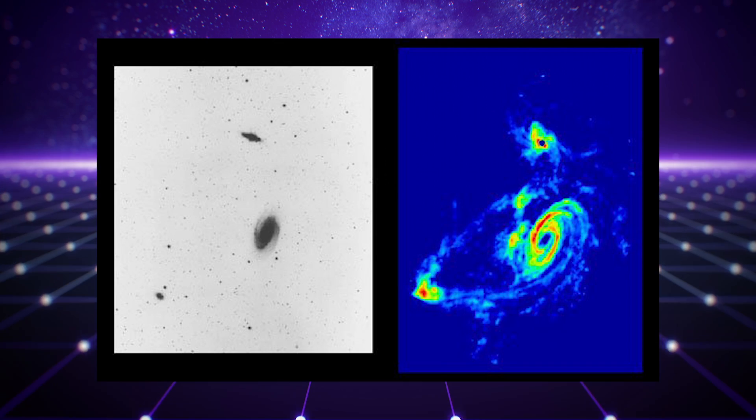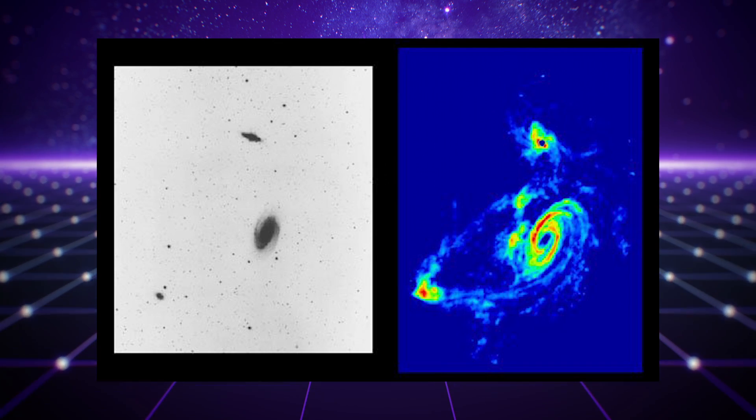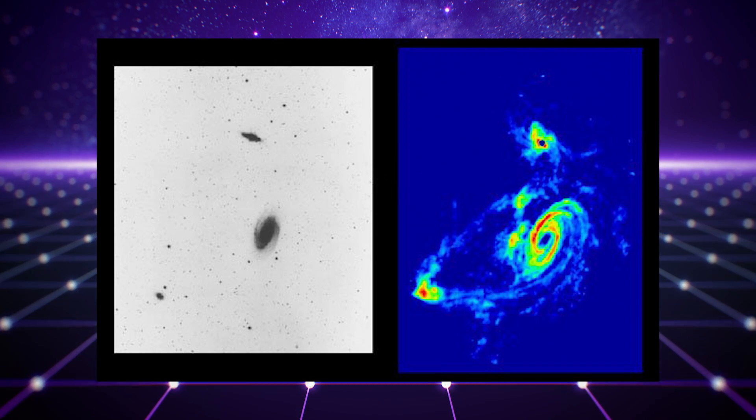If you look at three galaxies, you can see more details. In this case, a visible light spectrum can be compared with what you find in a radio telescope image.